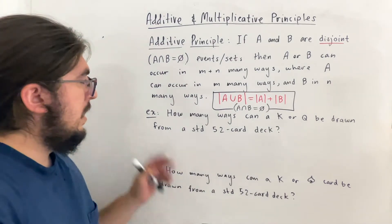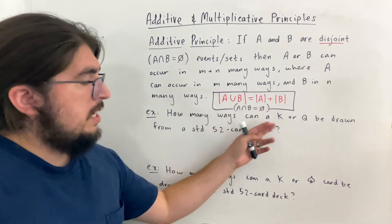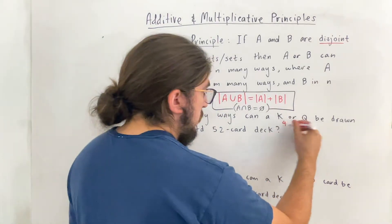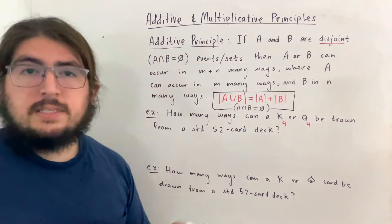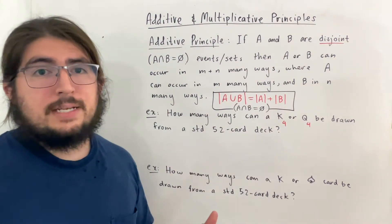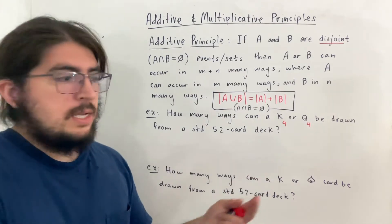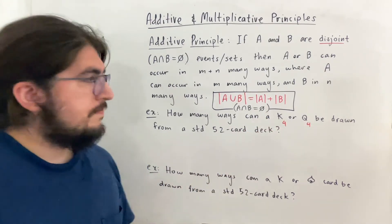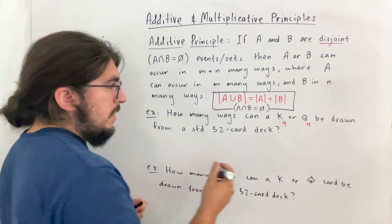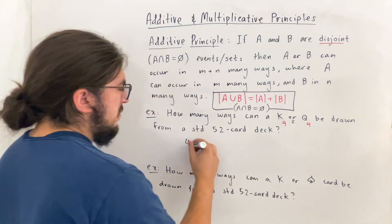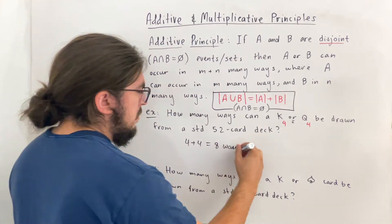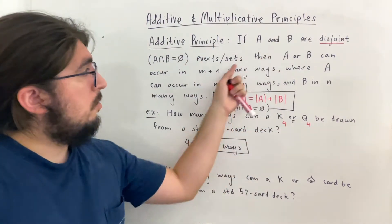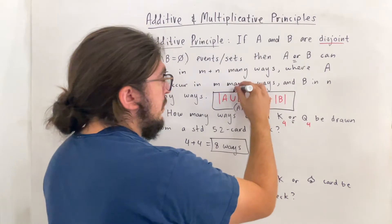But for right now, let's work with this example. So this asks, how many ways can a king or a queen card be drawn from a standard 52 card deck? So here there are four choices for K and four choices for Q. The amount of kings and the amount of queens are disjoint sets. There is no card that is a queen and a king at the same time. So for that reason, the amount of ways you can draw this or this is four plus four, which is just eight. So eight ways. Adding the amount of ways for each one because it's an or. Or corresponds to union.